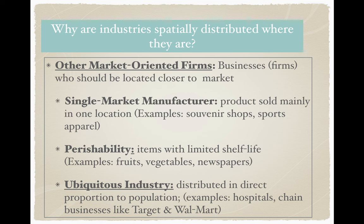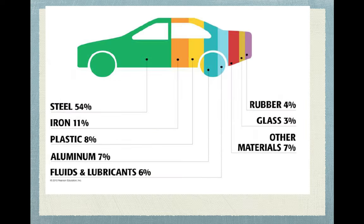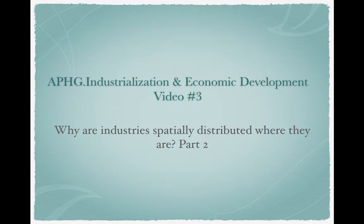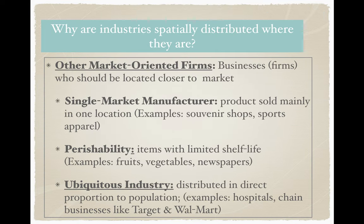Some other factors and considerations help us answer why industries are spatially distributed where they are. Some other things help us understand why businesses are market-oriented. We just talked about being market-oriented when discussing minimizing transportation costs and the Weber theory. You are market-oriented if you are bulk-gaining. If you're a bulk-gaining industry, you want to be really close to your market and you don't want to pay those expensive transportation costs. There are other reasons why industries decide to locate close to the market. One of those is if you're a single-market manufacturer — if your product is pretty much only sold in one location, then you've got to be close to that location.